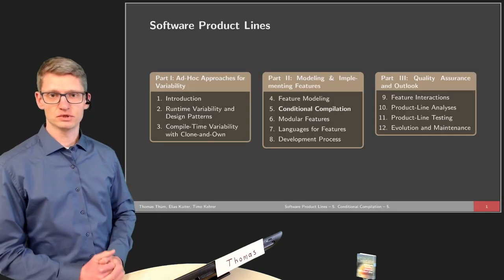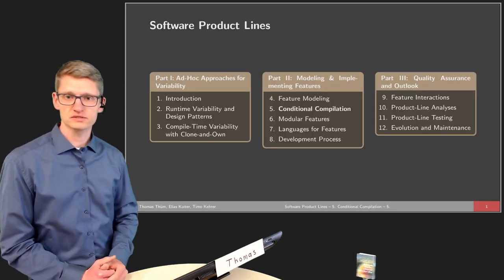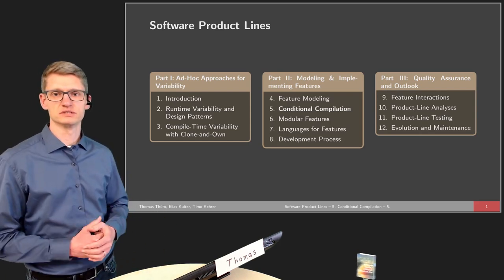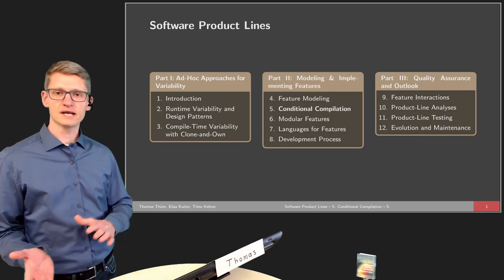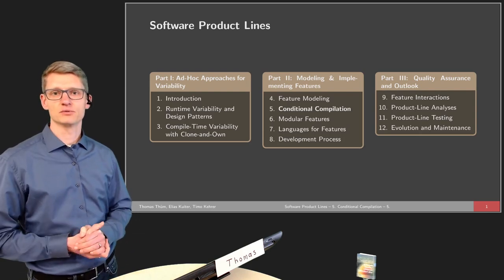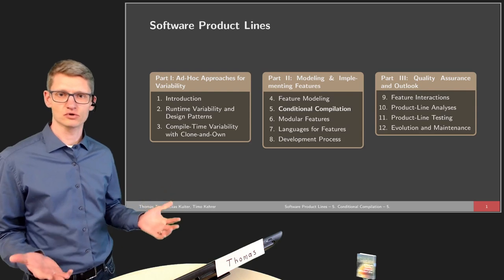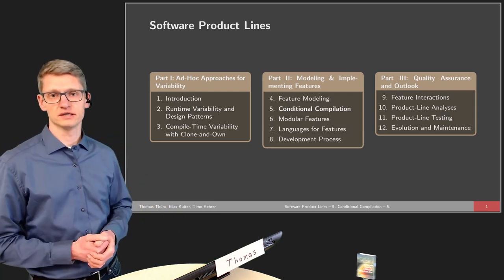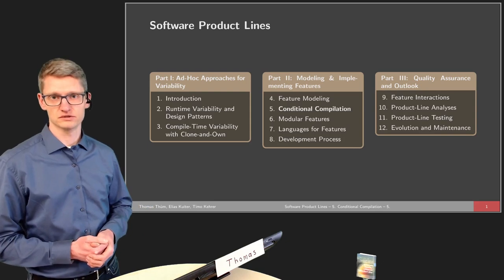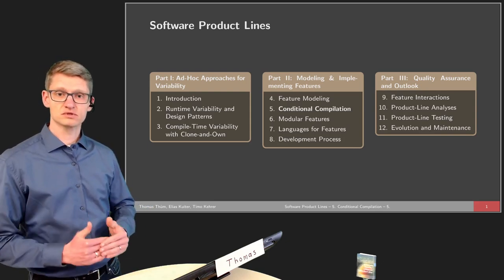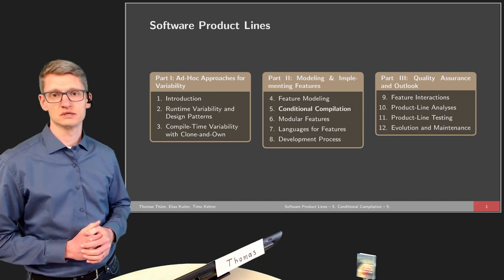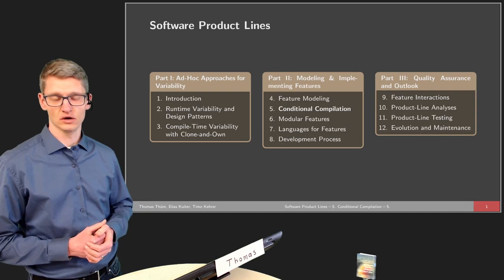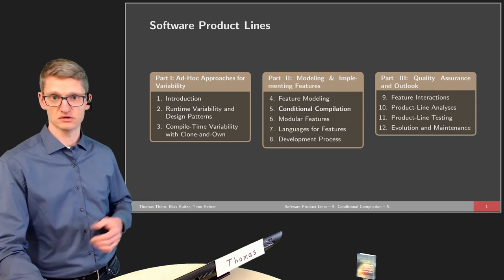In the past lectures we looked at a couple of topics already. We looked at ad hoc approaches to variability like runtime variability or clone and own. In the last lecture we looked at feature modeling — how to specify the features of a domain, of a product line, and how to identify and specify the valid combinations of features. Today is the first lecture where we want to see how those features modeled in a feature model can be implemented at the implementation level in software artifacts.